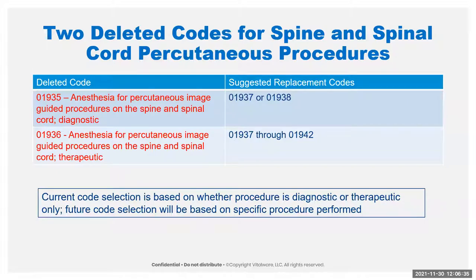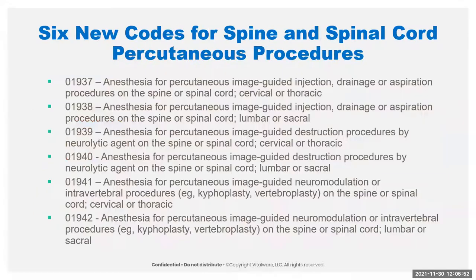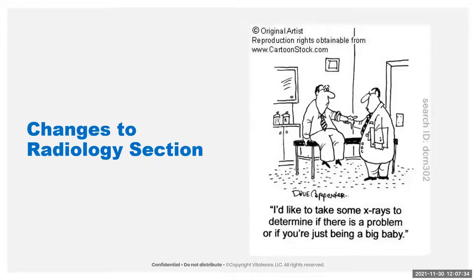They're also doing some switching because they're changing some CPT codes in the musculoskeletal spinal section. For 2021, your code was based on whether it's a diagnostic or therapeutic procedure, end of story. Next year we have six new codes replacing that, broken down by type of procedure: drainage or aspiration has a set of codes, destruction by neurolytic agent has another set, and neuromodulation or other intervertebral procedures has more codes — all broken down by section. That's it for anesthesia, though it's actually a big set of changes for anesthesia.